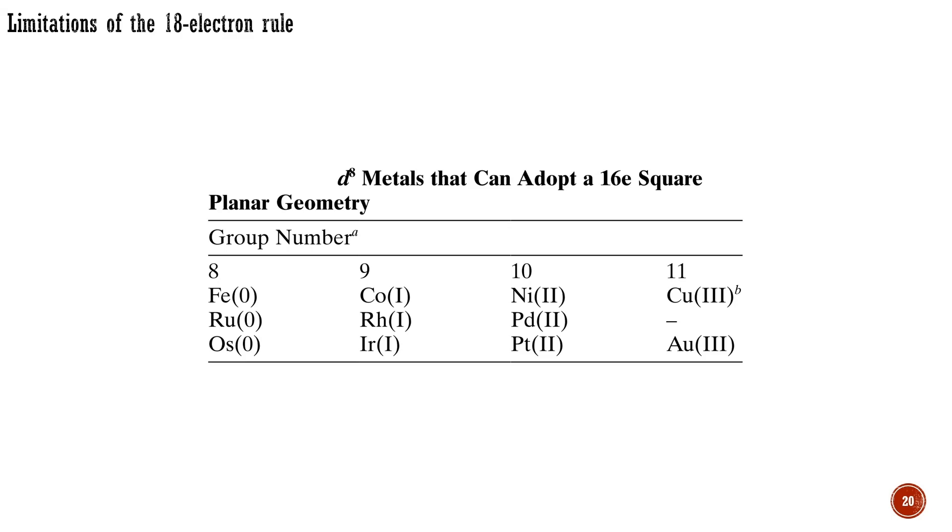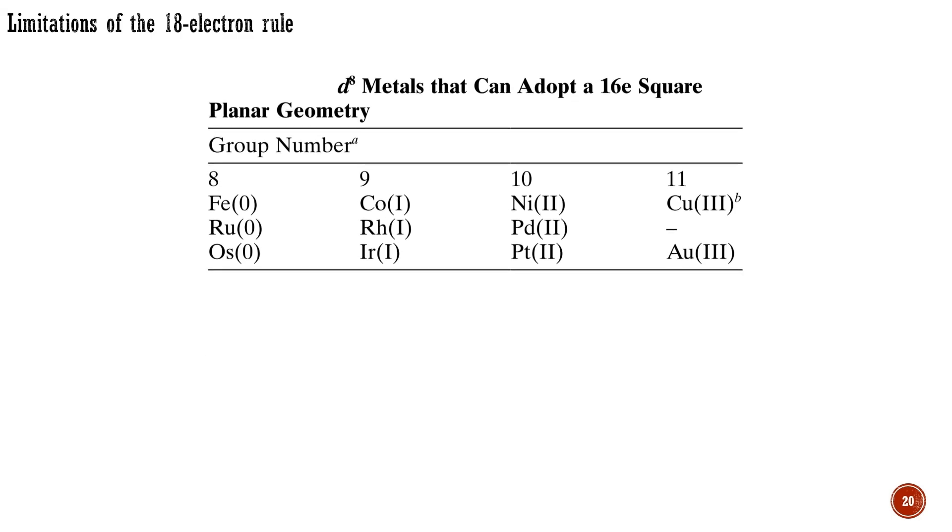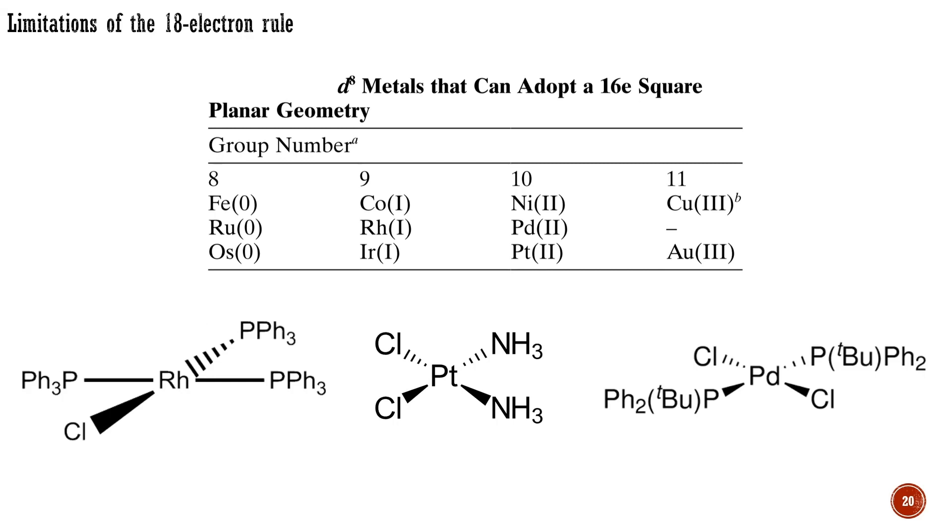This can happen for the d8 metals of groups 8 to 11. Group 8 shows the least and group 11 the highest tendency to become 16-electron. When these metals have 16 d-electrons, they normally adopt a square planar geometry, as in Wilkinson's catalyst, cisplatin, and related systems shown here.